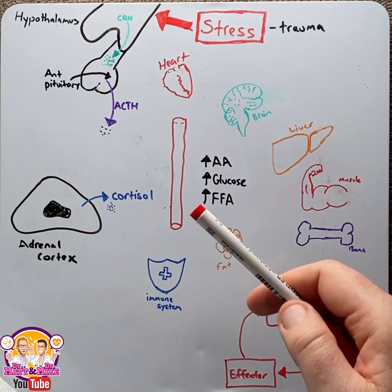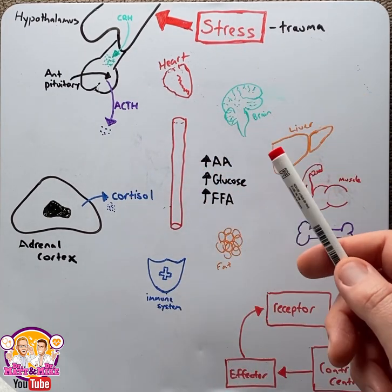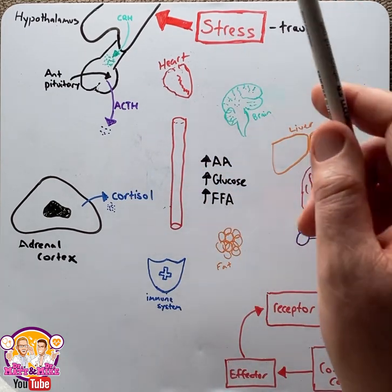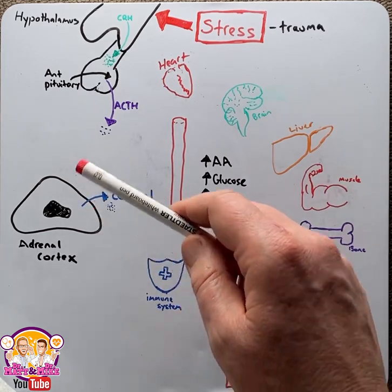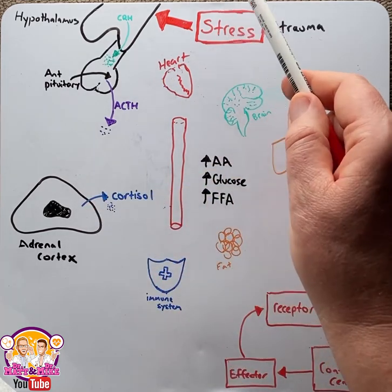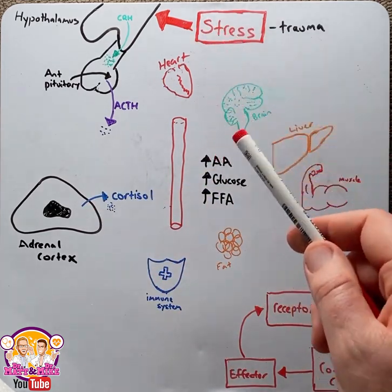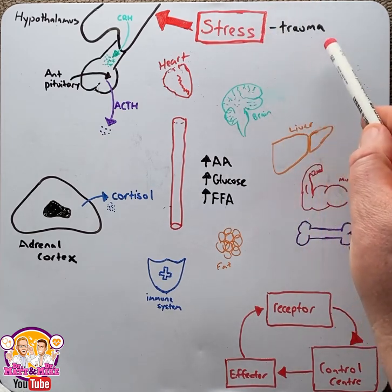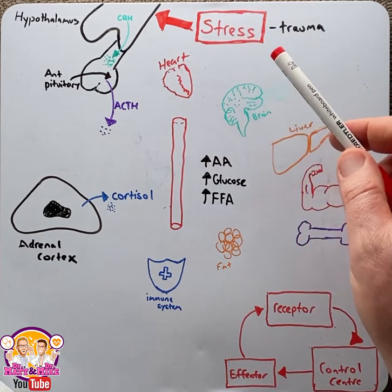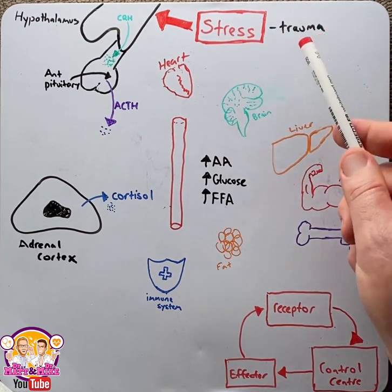Now we are ready for cortisol and stress. Almost all types of stress will result in an increased release of cortisol, whether the stress is physical or neurogenic. For today, the example will be trauma, specifically resulting in a laceration of tissue.